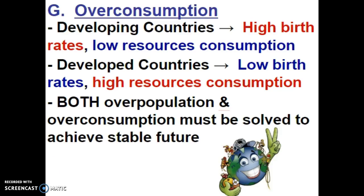In developed countries, we have a very large problem of resource consumption. The developed countries around the world take more of the resources but actually have fewer people. We have low birth rates in developed countries, while developing countries have a very high birth rate but do not consume many resources. But in order to achieve a stable future, both overpopulation and overconsumption need to be solved, so we can sustain our populations with the resources that we have.